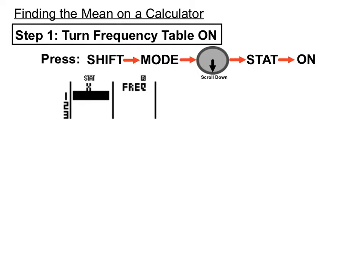The calculator should remember that the next time you try to put numbers into the stats mode. Once that frequency table is on it tends to stay on as the default. So that's the first step for me.